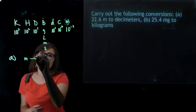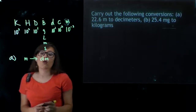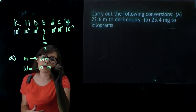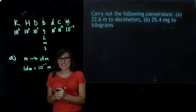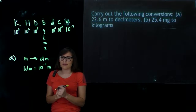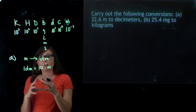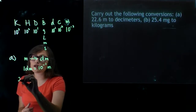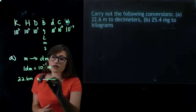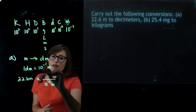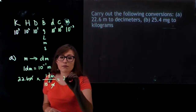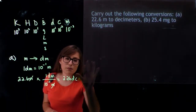If we're going from meters to decimeters, we know 1 decimeter is equal to 10 to the negative 1 meters. This makes sense because deci is smaller than meters, so we're going to have a lot more of them. We have 22.6 meters, and we multiply by our conversion factor. We want meters to cancel out, so meters goes on the bottom, and decimeters on the top. Meter and meter cancel out, and this ends up being 226 decimeters.